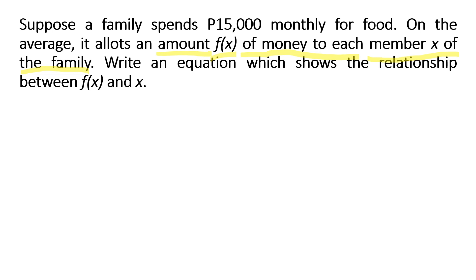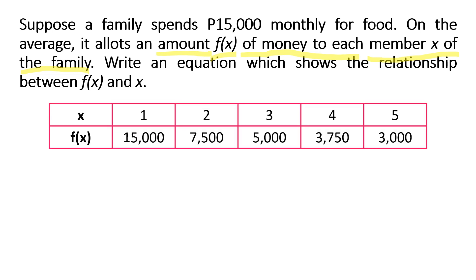And as x decreases, f(x) increases. To visualize it, take a look at this table. The first row x refers to the number of family members, while the second row f(x) refers to the amount of money spent on food per family member. When there is only one family member, f(x) is 15,000 pesos. If there are two members, then 15,000 pesos is shared by two and each receives 7,500. When there are three family members, 15,000 is shared by three, so each gets 5,000 pesos.